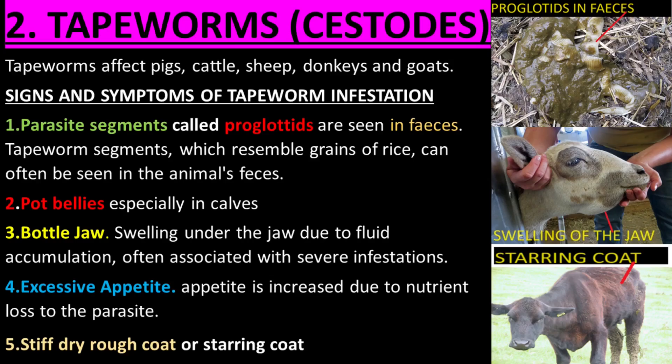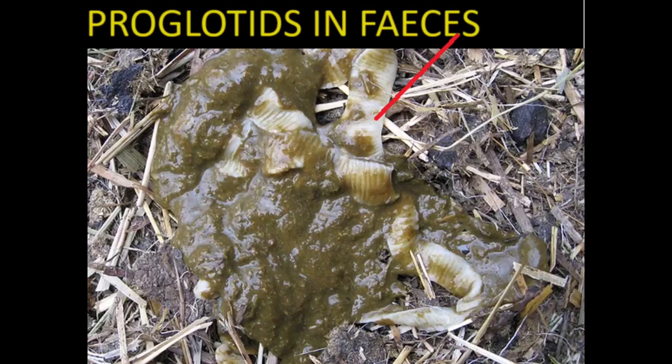Tapeworms affect pigs, cattle, sheep, donkeys, and goats. Signs and symptoms of tapeworm infestation: parasite segments called proglottids are seen in feces.